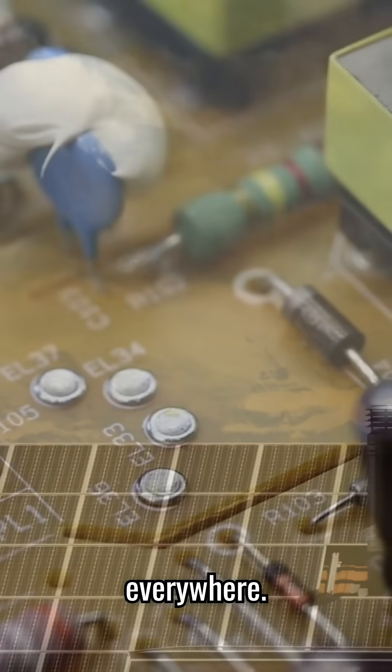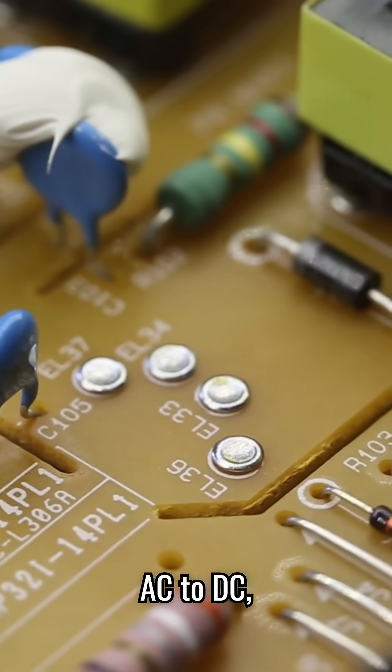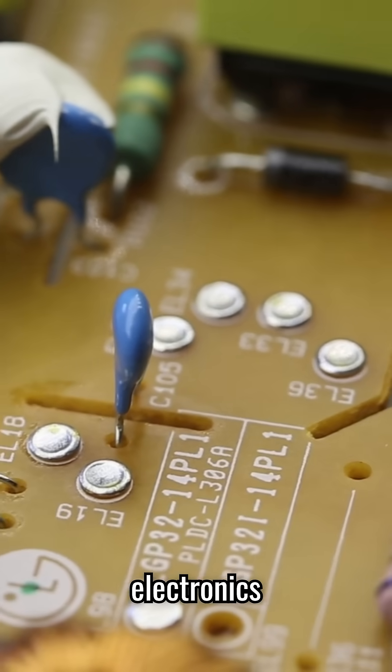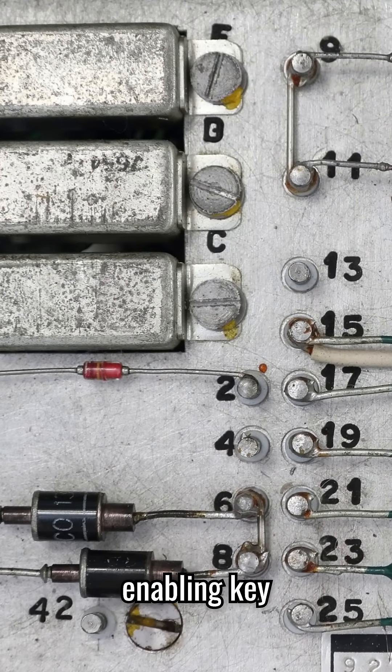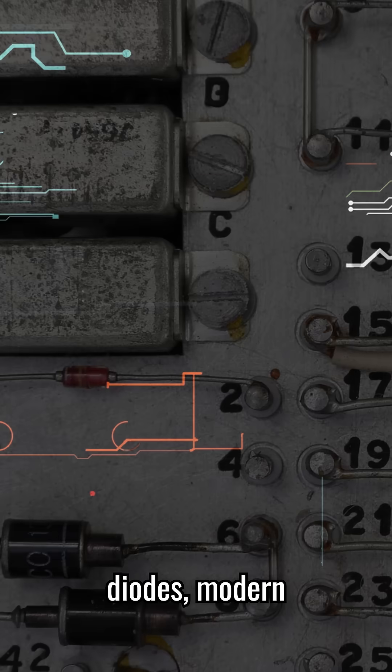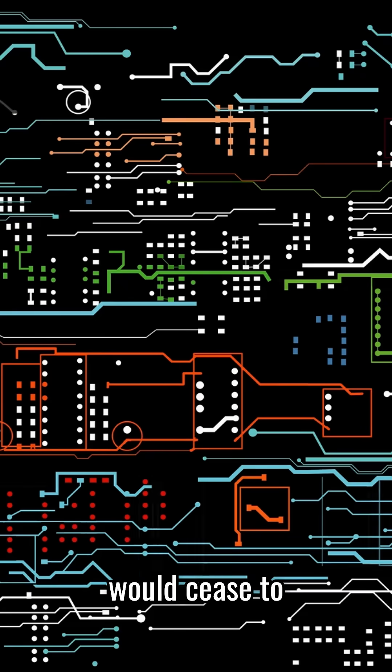Diodes are everywhere. They convert AC to DC, protecting your devices from power surges, ensuring your electronics function safely, and enabling key systems like telecommunications and data transfer. Without diodes, modern electronics would cease to function.